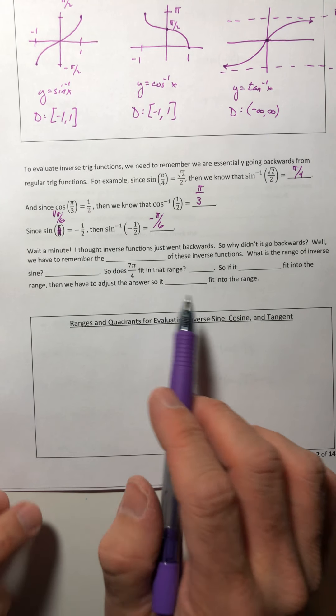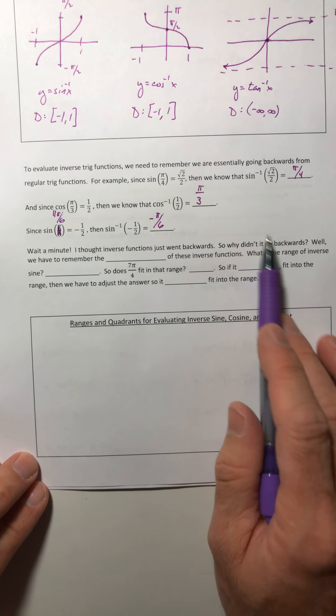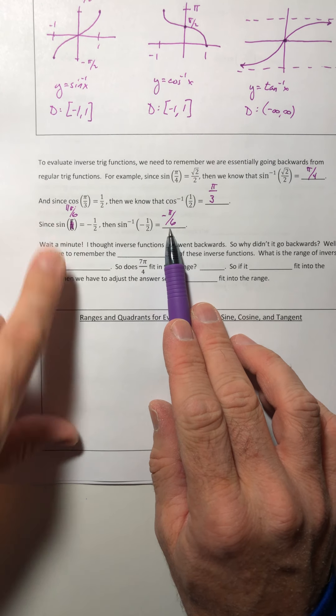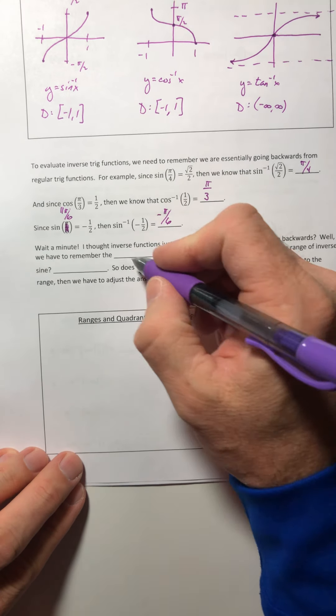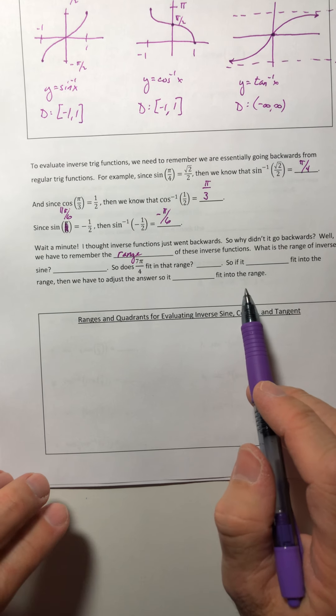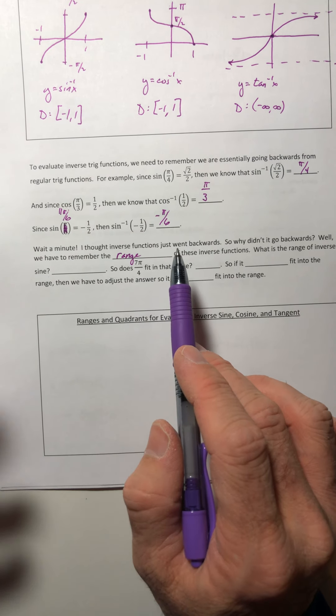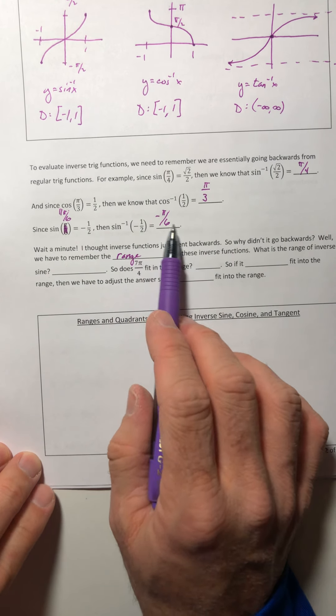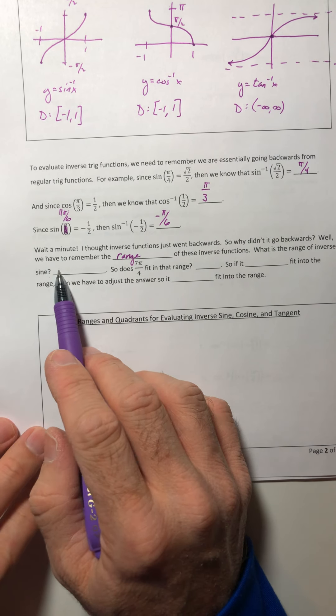Whoa, whoa, whoa, wait a minute. I thought inverse functions just went backwards. Well, they do. Well, why didn't this one go backwards? These two did, but this one didn't. Like, these are two totally different numbers. Well, you have to remember what the range of these inverse trig functions are. So what is the range of inverse sine? Because remember, when you evaluate the function, all of the answers have to come out into whatever the range is.